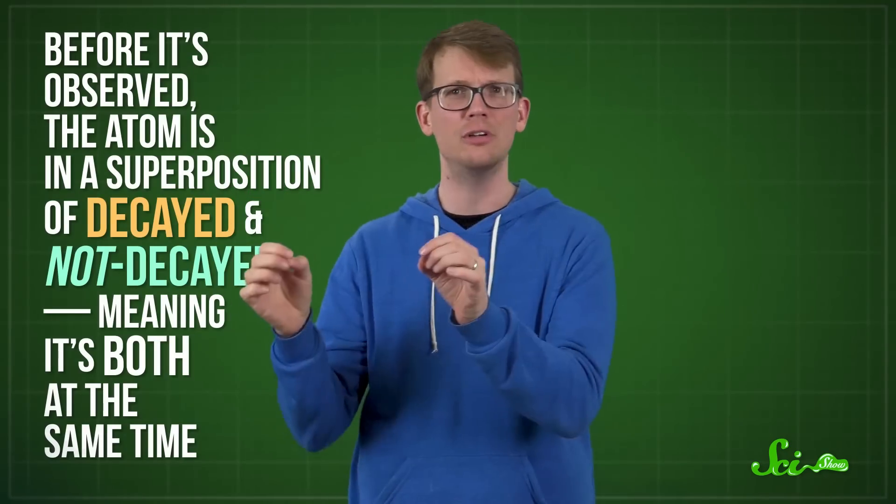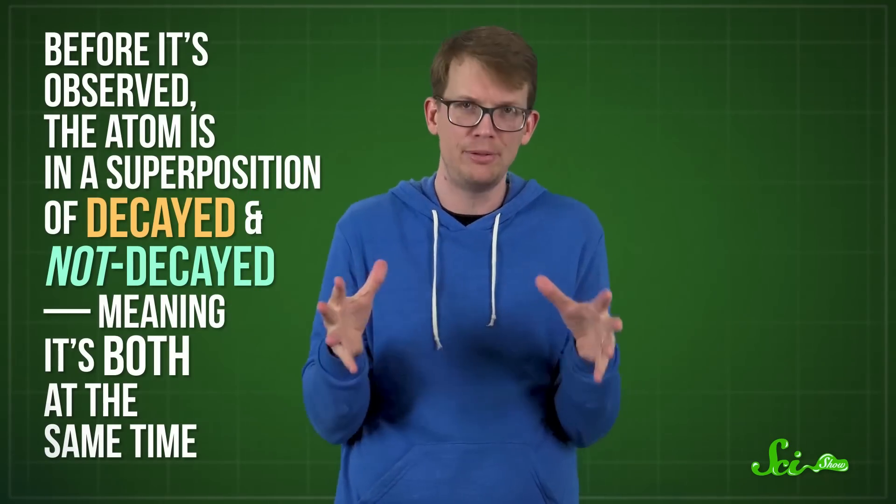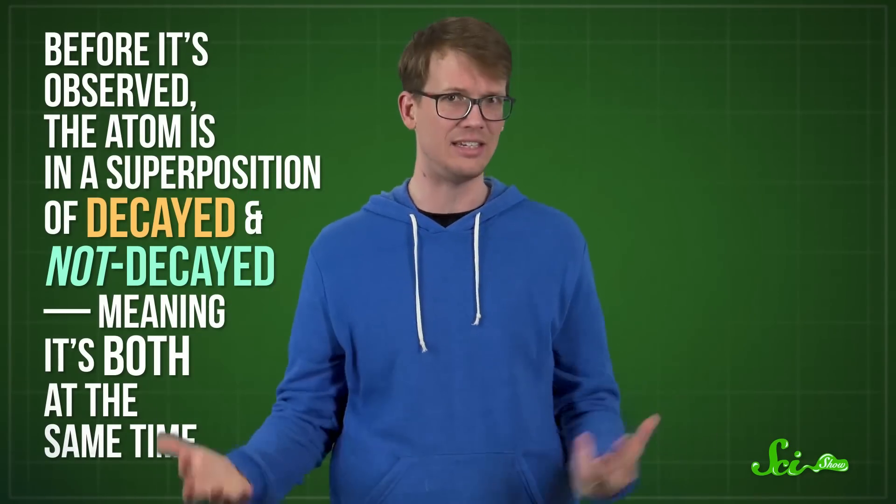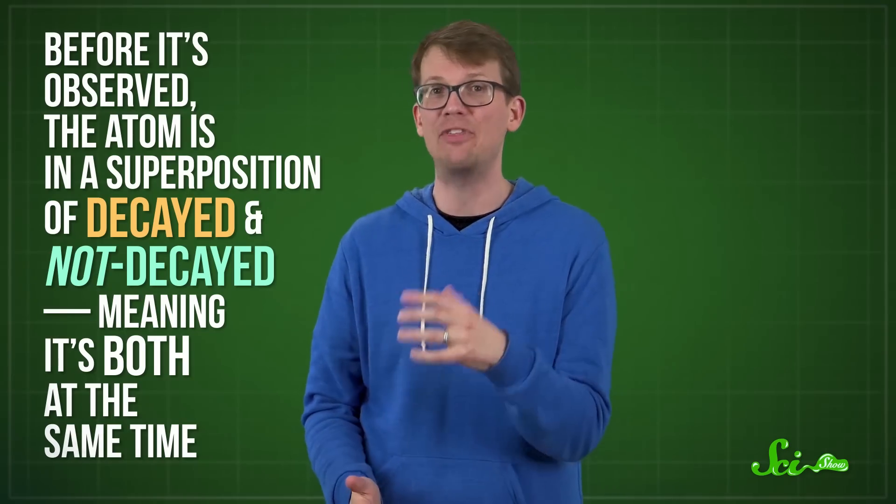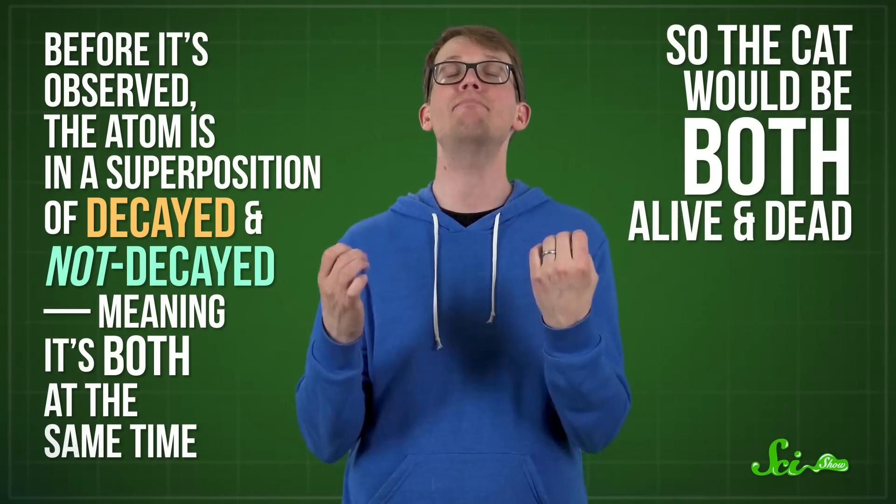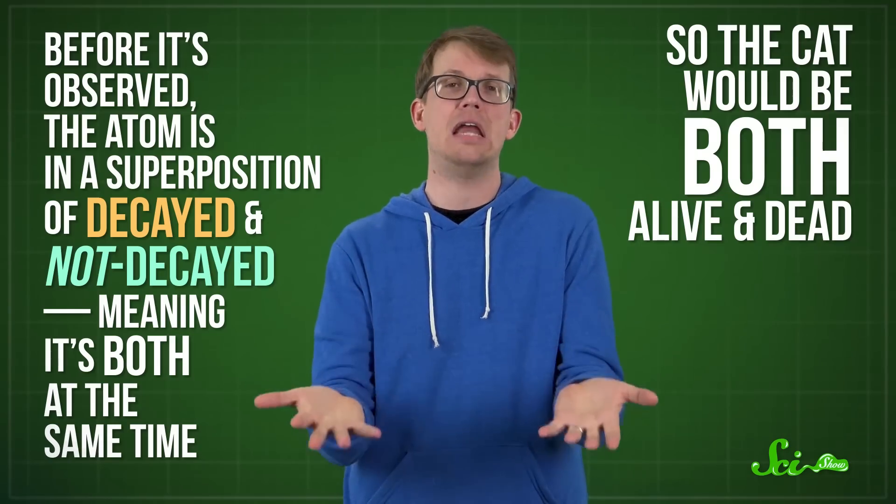Normally, if there was a 50-50 chance that a cat was alive, you'd say that the cat was either alive or dead. You just wouldn't know which. But here's where the Copenhagen interpretation is different from regular probability. Before it's observed, the atom is in a superposition of decayed and not decayed, meaning it's both at the same time. So the cat would be both alive and dead. Once you open the box, you turn the superposition into one state you can actually observe.